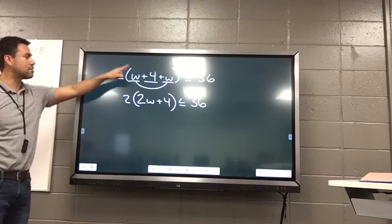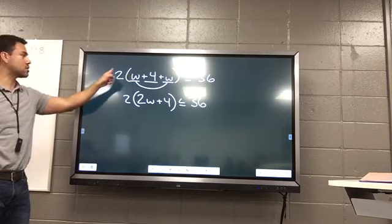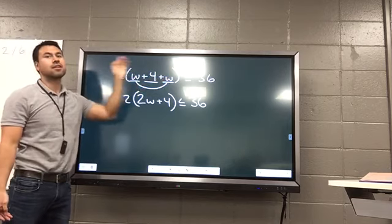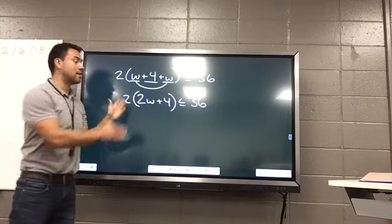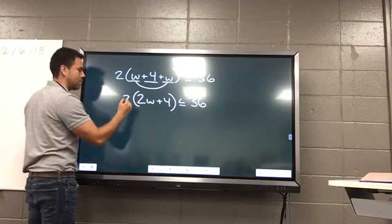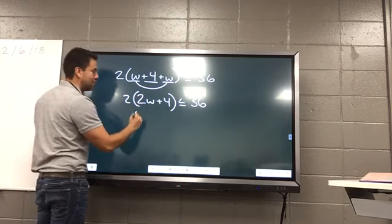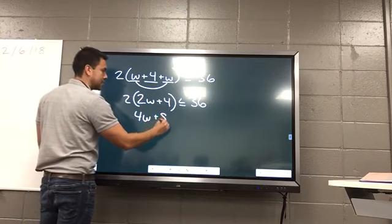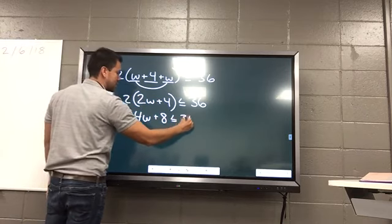Alex, you said distributive property. You could have done it. What's two times W? Two W. What's two times four? Eight. Two times W? Two W. You're going to get the same thing down here. You'll see in just a moment. All right, now can I use the distributive property? What's two times two W? Four W. So you would still get that. Two times four? Eight. That's less than or equal to 36.